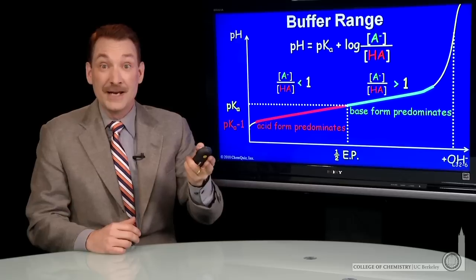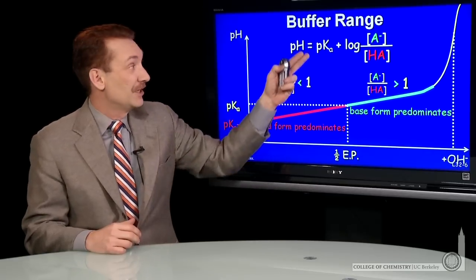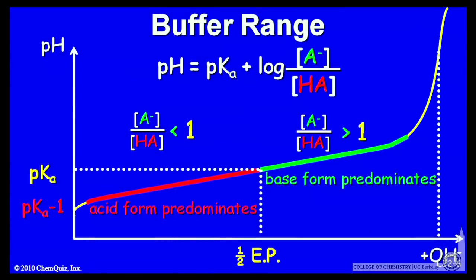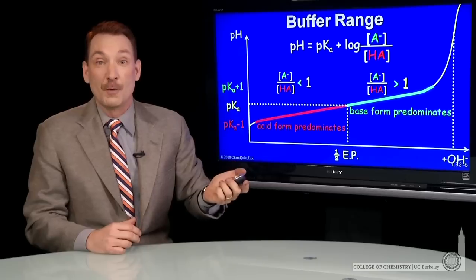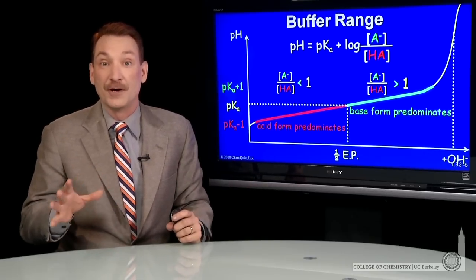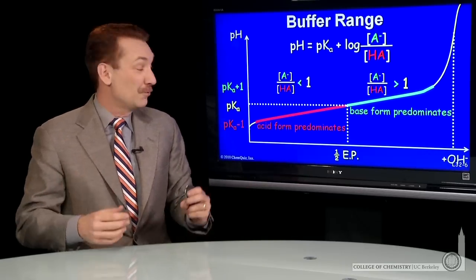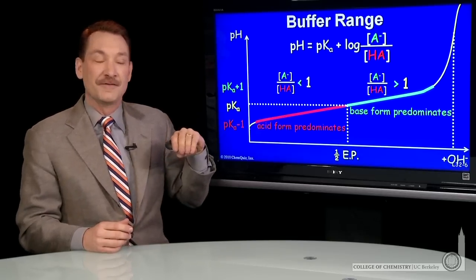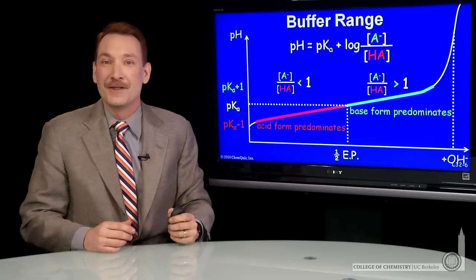Now, we define the buffer region, the region where this expression holds, to be from pKa minus 1 up to pKa plus 1. So for instance, if your weak acid was acetic acid, it has a pKa of around 4.75. The buffer region would be from 3.75 to 5.75, one unit around the pKa.